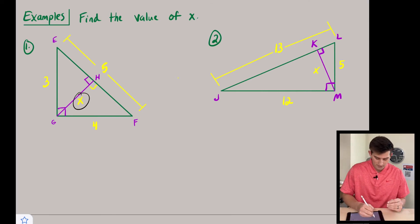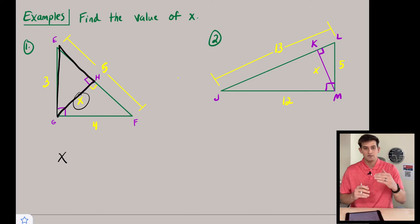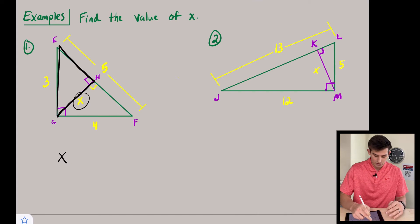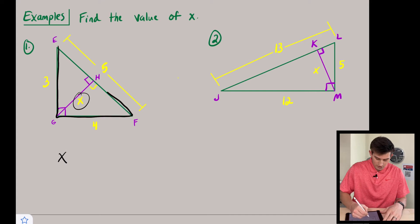So the first thing we want to notice is where x is located. So it is on our altitude, but if I think about this triangle right here, x is like the bottom leg of my triangle. If I look at my larger triangle EGF, my bottom leg is four units.